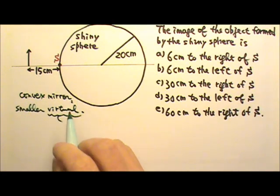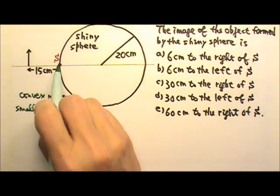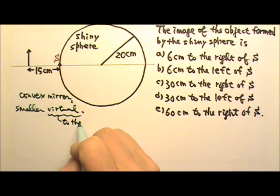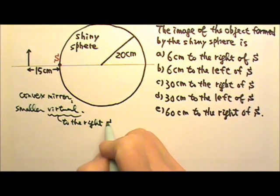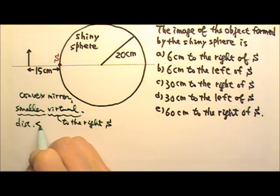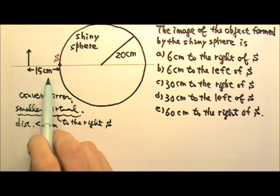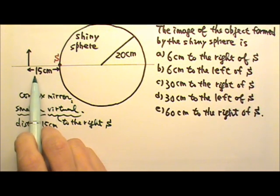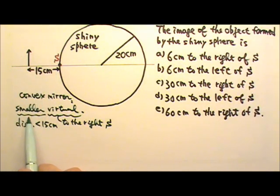So this virtual image tells us that the image must be to the right of S. And the smaller image means the distance must be less than 15 cm. Because the farther away the image is formed, the larger the image. The closer the image is formed, the smaller the image. Because the image is smaller than the object, we know the distance must be less than 15 cm.